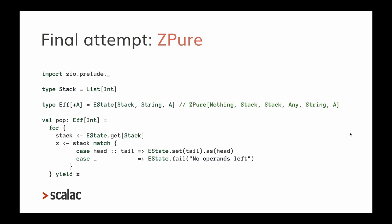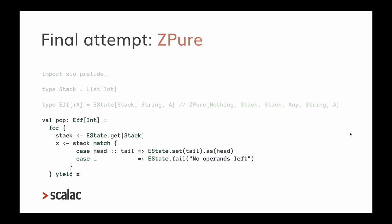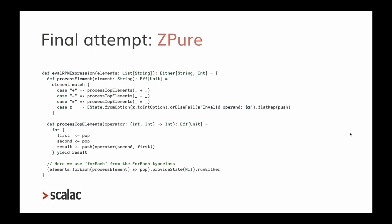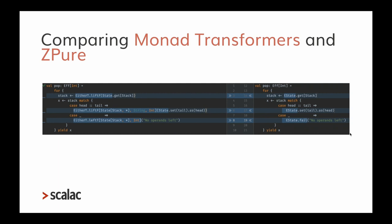In our final attempt with ZPure, the Stack is again just a list of integers — no ZRef needed. The Effect type is EState where the state is the Stack and the error type is String. The pop method is very simple; to fail I call EState.fail. The solution fits in one slide, and comparing with the monad transformer solution there is a huge difference. Compared to ZIO 2, they are actually very similar.